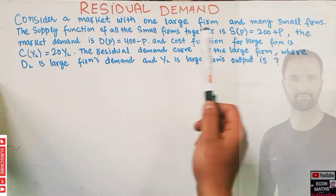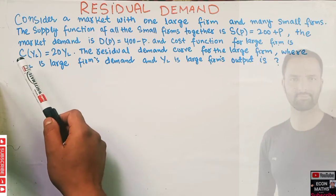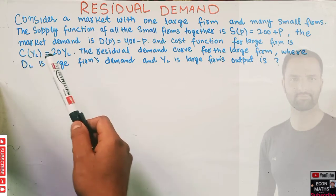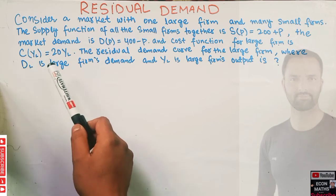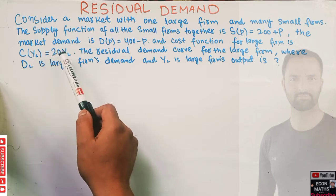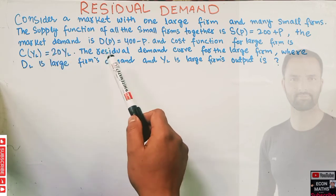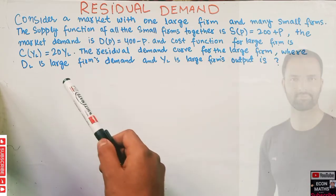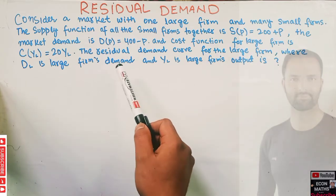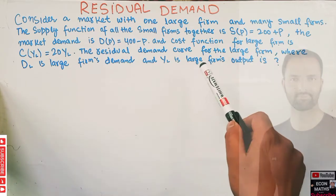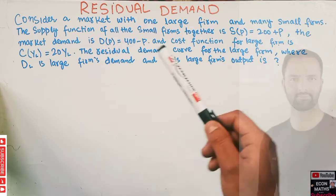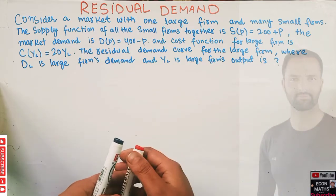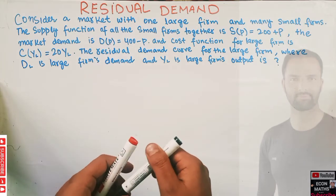The cost function for the large firm is given by C(Y_L) = 220 Y_L, where Y_L denotes the output of the large firm. We have to find the residual demand curve for the large firm, where D_L denotes the large firm's demand and Y_L denotes the large firm's output.